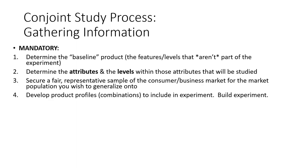First, we're going to determine the baseline product that we're going to present to individuals. By baseline, I mean the features of the product that we aren't actually including in our study, but we have to describe to the respondents so they understand the product, service, or experience that we're talking about. Then, we have to figure out which attributes and levels within those attributes of the product that we're actually going to be studying in the conjoint experiment. These are the things that we'll be manipulating and seeing how people respond to them.